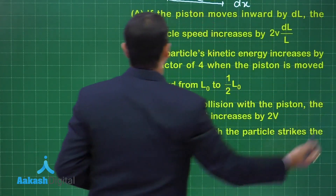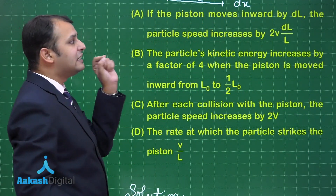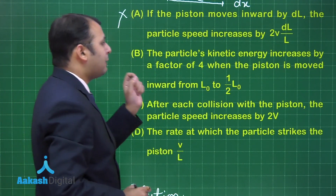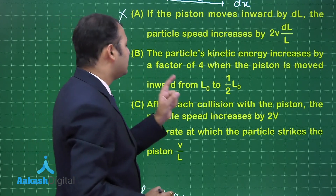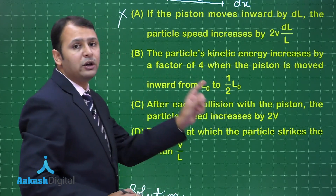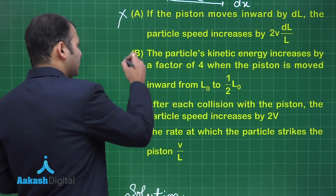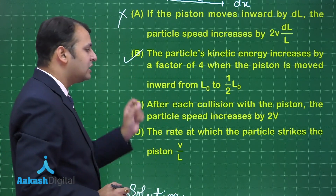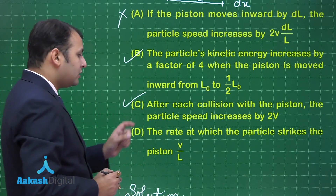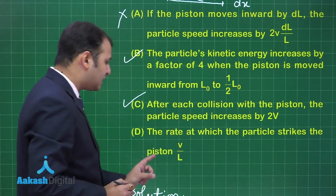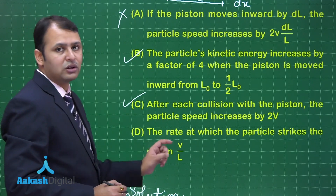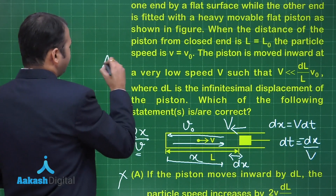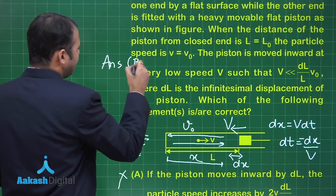Checking the options: option A — the particle speed increases by 2V·dL/L when the piston moves inward by dL — this is wrong. Option B — the particle's kinetic energy increases by a factor of 4 when the piston moves from L₀ to L₀/2 — yes, since velocity doubles, KE quadruples, so this is correct. Option C — after each collision with the piston, the particle speed increases by 2V — yes, also correct. Option D — the rate at which the particle strikes the piston — not matching what we found. The correct answer is options B and C.